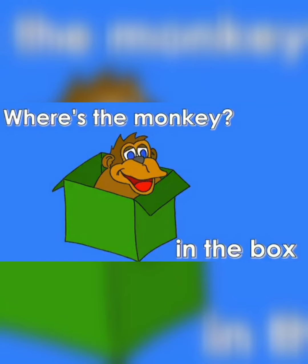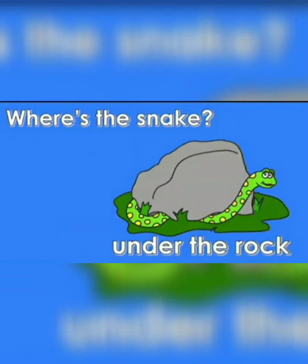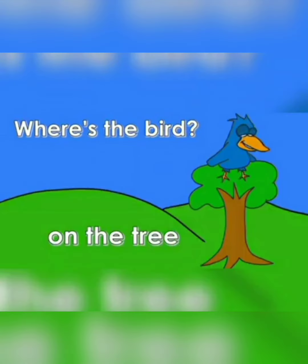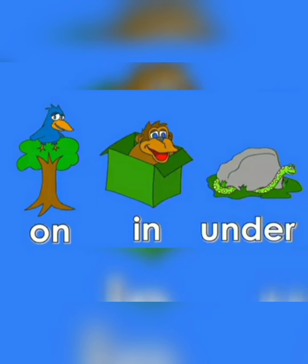For example, the monkey is in the box. Where is the monkey? In the box. The snake is under the rock. Where is the snake? Under the rock. The bird is on the tree. Where is the bird? On the tree. So on, in, and under are position words.